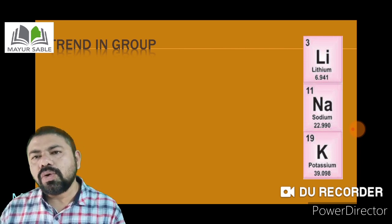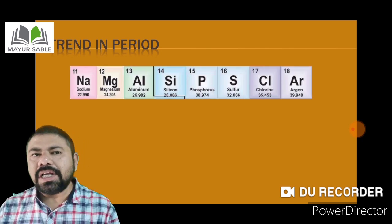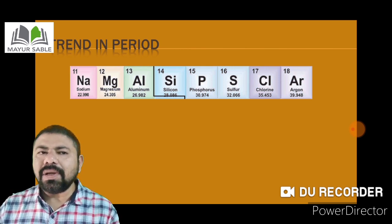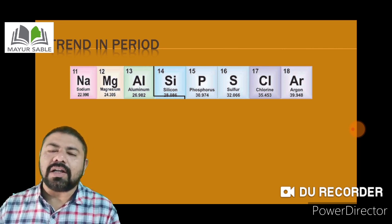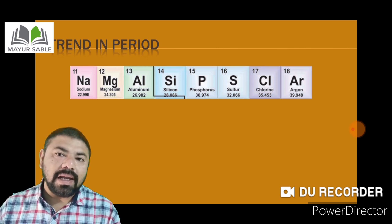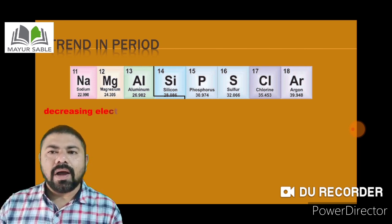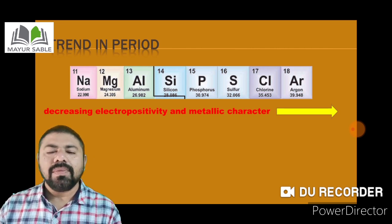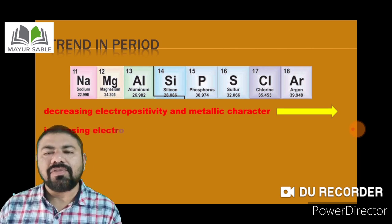While going from left to right within a period, the outermost shell remains the same; however, the positive charge on the nucleus goes on increasing while the atomic radius goes on decreasing. Therefore, the effective nuclear charge also increases, and the tendency of the atom to lose its valence shell electrons decreases within a period from left to right. Thus the metallic character — which is the electron-donating capacity — decreases while going from left to right in a period.